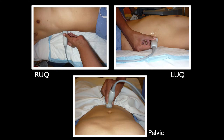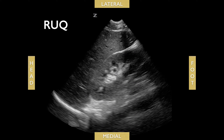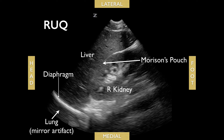Here are the different abdominal views. For the right upper quadrant, place your probe in the mid-axillary line at the tenth rib space with the indicator up towards the patient's head. From superior to inferior you'll see the lung, diaphragm, liver, Morrison's pouch, and then the right kidney.